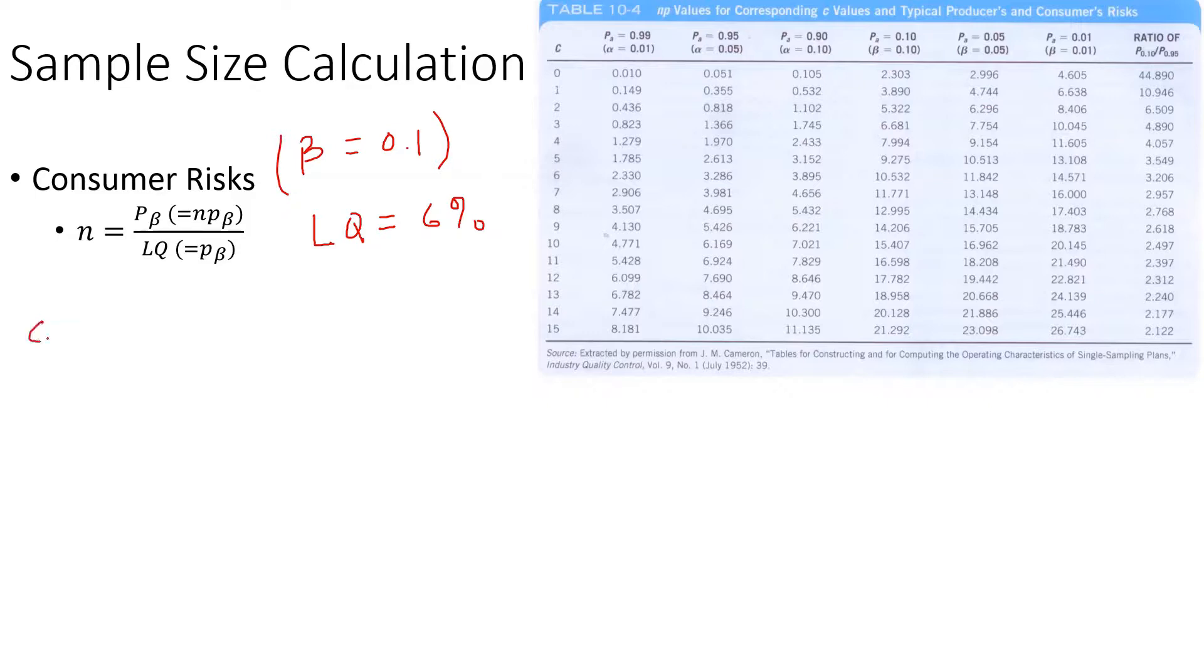For C value 1, with the 0.1 probability of consumer risk, the PA value (probability of acceptance) or NP value is 3.89. So we can calculate n1 equals 3.89 divided by the LQ, which is 6 percent or 0.06. If we calculate this, we get 63. Now let's set C equals 3.